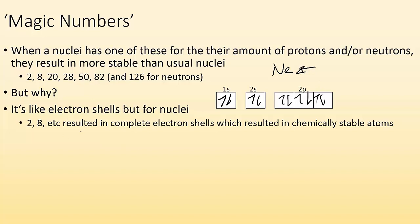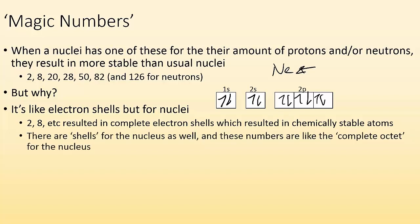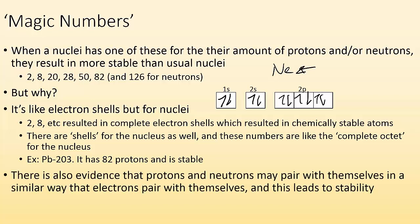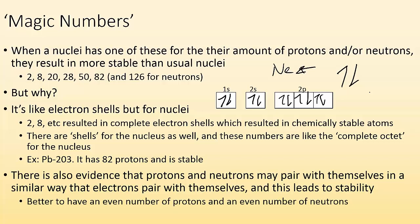So it's like that, but it's for nucleons, like protons and neutrons. So there are shells for the nucleus as well. And these numbers are like the complete octet for the nucleus instead of the electrons. Example, lead-208. Lead has 82 protons and it's stable. There's also evidence that protons and neutrons may pair themselves up in a similar way that the electrons do. Just like how in one box I can have a spin up and a spin down and there's some stability that goes with that. The protons may do that and the neutrons may do that. So it's better to have an even number of protons and an even number of neutrons.